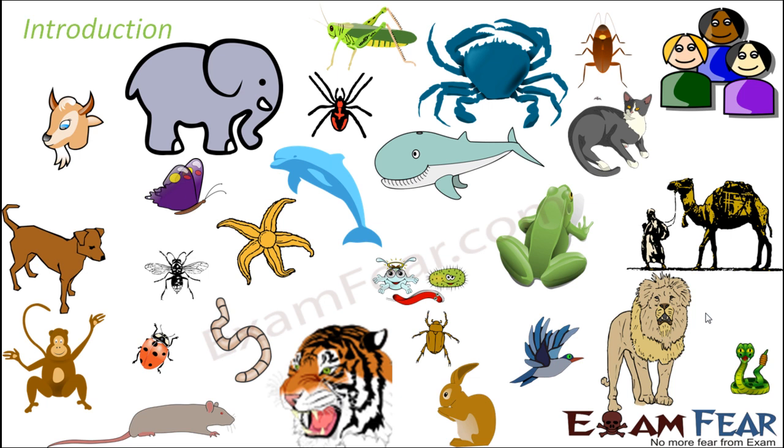Here we are going to talk about how these organisms are dependent on each other, how they interact with each other and not only with each other, but also with certain other components of the environment which might not be living. They are non-living components, but they are very much required for the survival of these organisms. That is our agenda in this lesson.